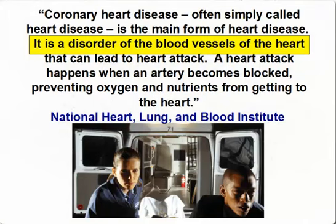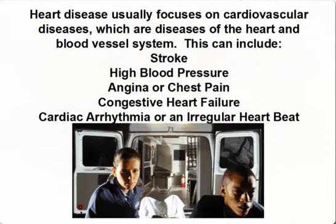The clue is highlighted in yellow: it is a disorder of the blood vessels of the heart. Before I show you how this unlocks a natural method to directly address this key, let's look at the broad definition. The broad definition for heart disease usually focuses on cardiovascular diseases, which are diseases of the heart and blood vessel system. This can include stroke, high blood pressure, angina or chest pain, congestive heart failure, and cardiac arrhythmia or an irregular heartbeat. The clue to most heart and cardiovascular diseases showed up again in the broad definition — highlighted in yellow: blood vessel system. Something is going on in the blood vessel system of your heart and throughout your body.